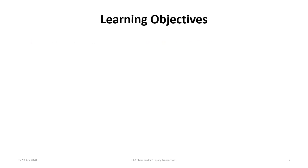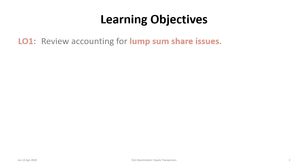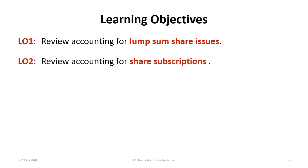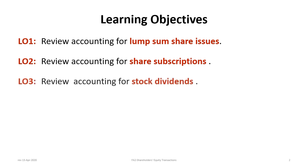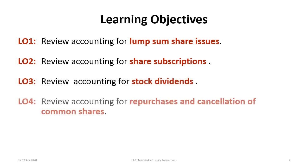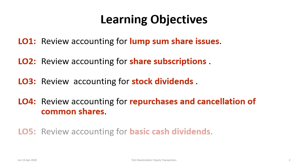This tutorial has five main learning objectives. The first is to review accounting for lump sum share issues. The second is to review accounting for share subscriptions. Third, review accounting for stock dividends. Fourth, review how to account for repurchases and cancellation of common shares. And fifth, to review accounting for basic cash dividends.